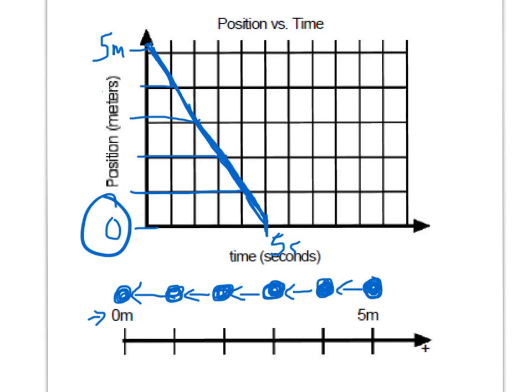Before, he traveled 5 meters in 4 seconds. And also notice that this slope is negative. Because it's going from 5 down to 0.